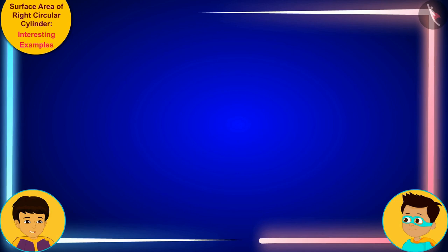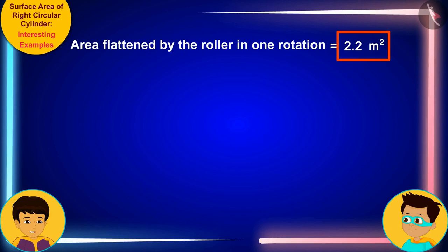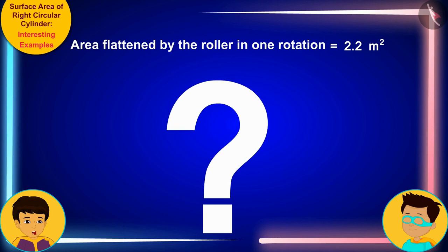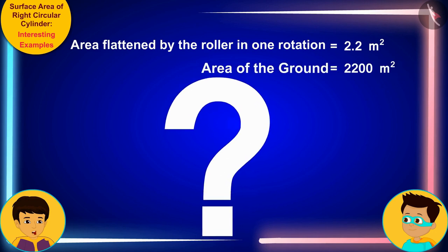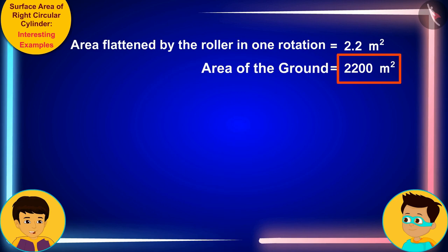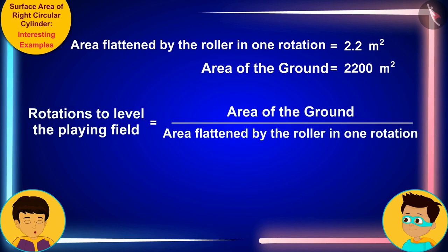Now it's very easy. Look Thomas, in one rotation the roller flattens an area of 2.2 square meters. So in order to find the number of rotations the roller takes to level the entire ground that is 2200 square meters, we only need to divide the area of the field 2200 square meters.